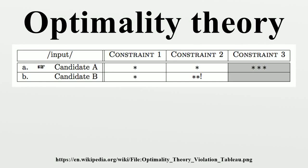Optimality theory is a linguistic model proposing that the observed forms of language arise from the interaction between conflicting constraints. OT differs from other approaches to phonological analysis, such as auto-segmental phonology and linear phonology, which typically use rules rather than constraints. OT models grammars as systems that provide mappings from inputs to outputs. Typically, the inputs are conceived of as underlying representations, and the outputs as their surface realizations.